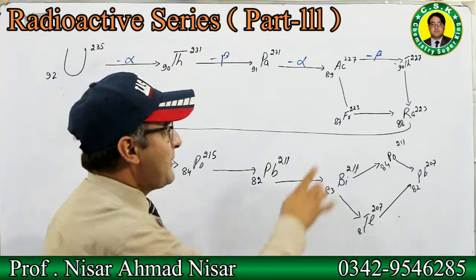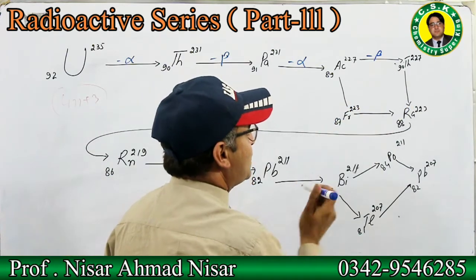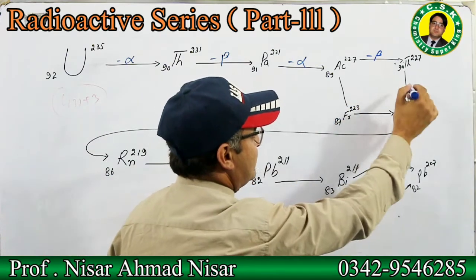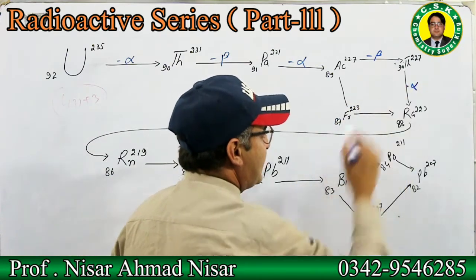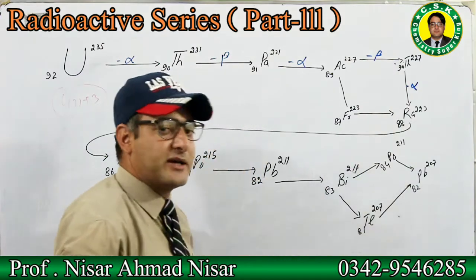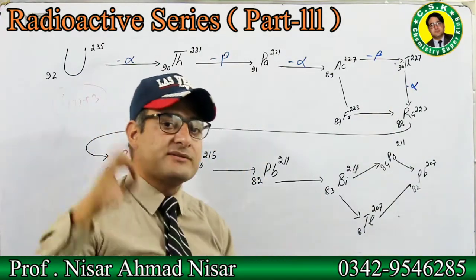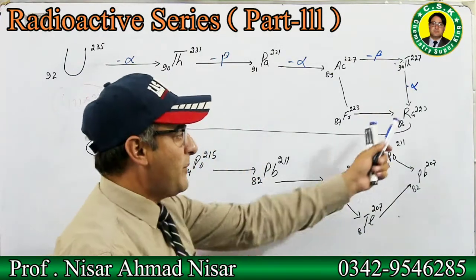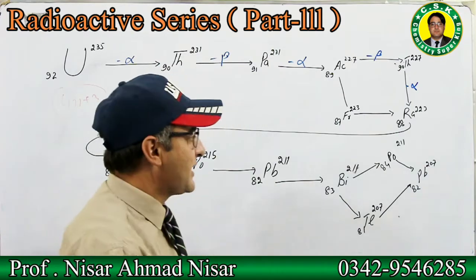From actinium, another alpha particle is emitted — atomic number decreases by 2 and mass number decreases by 4 — giving us radium.